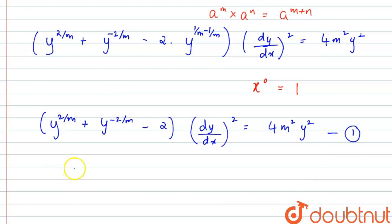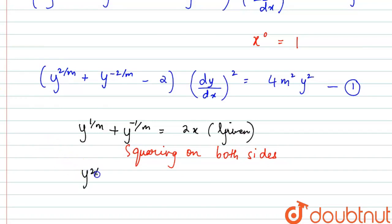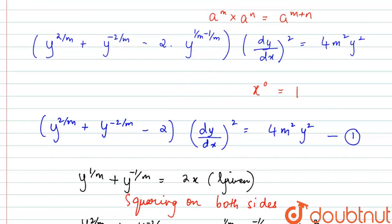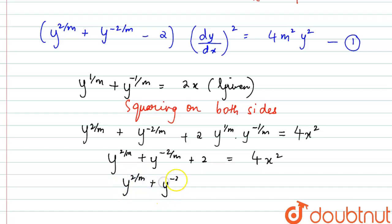From the question, y^(1/m) + y^(−1/m) = 2x is given. Squaring both sides gives: y^(2/m) + y^(−2/m) + 2·y^(1/m)·y^(−1/m) = 4x². Since y^(1/m)·y^(−1/m) = 1 as proved above, this becomes y^(2/m) + y^(−2/m) + 2 = 4x², so y^(2/m) + y^(−2/m) = 4x² − 2. We take this as Equation 2.